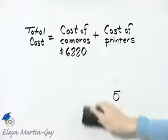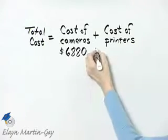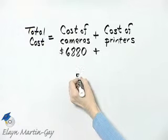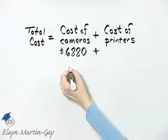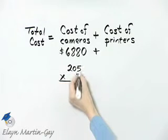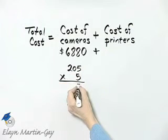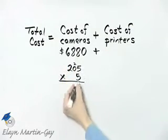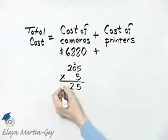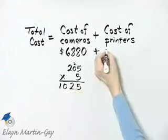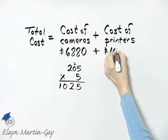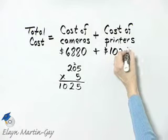Now we'll add to that the cost of the printers. 5 printers were purchased; they cost $205 each. 5 times 5 is 25 — carry the 2. 5 times 0 is 0, plus 2 is 2. 5 times 2 is 10. So the total cost of the printers is $1,025.